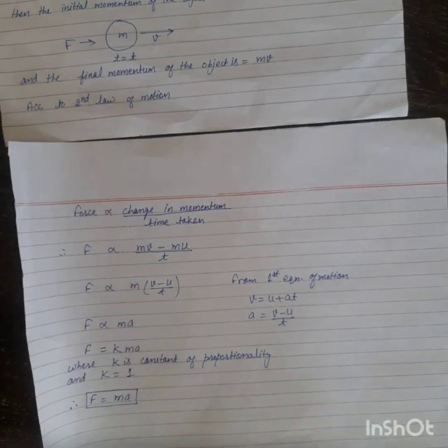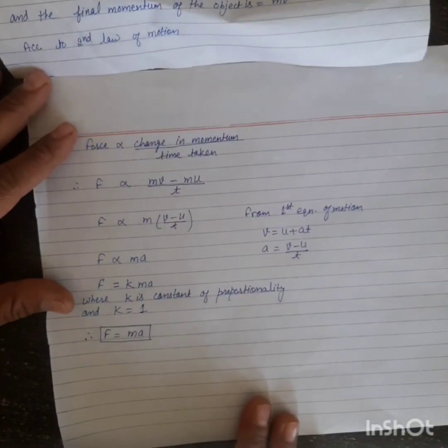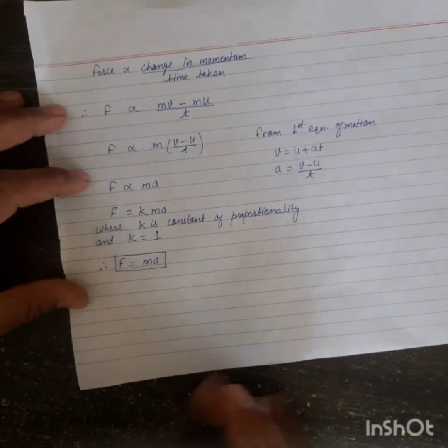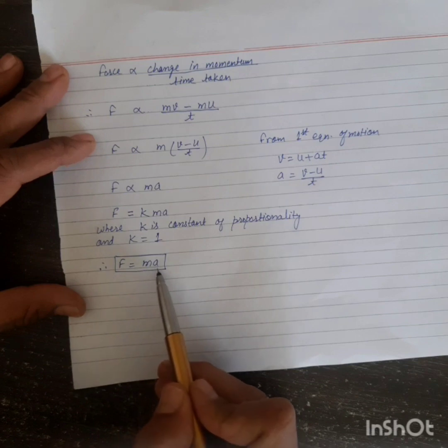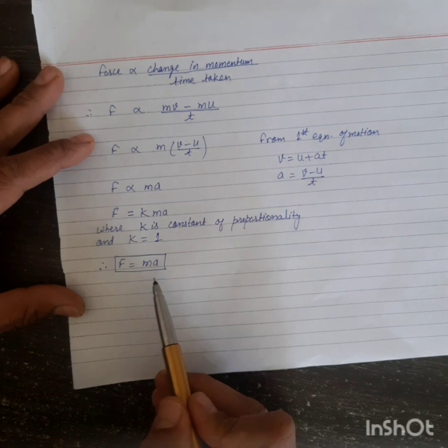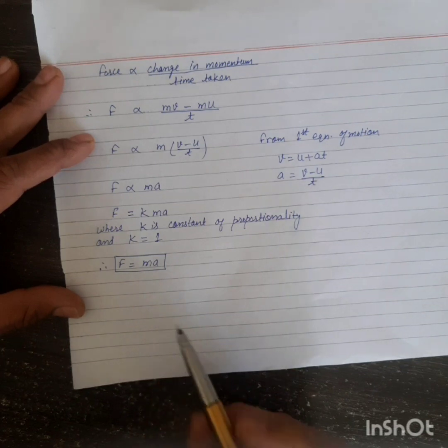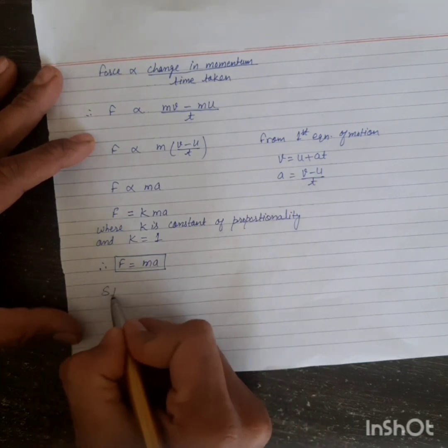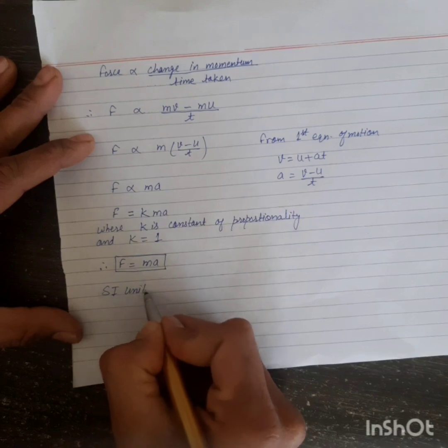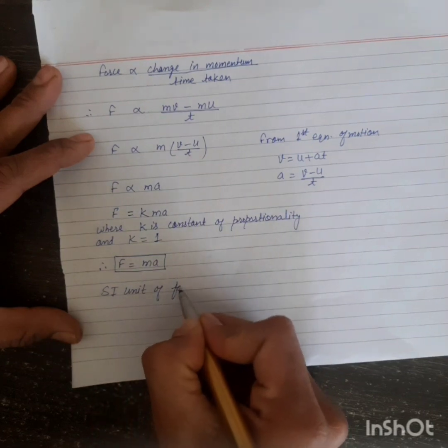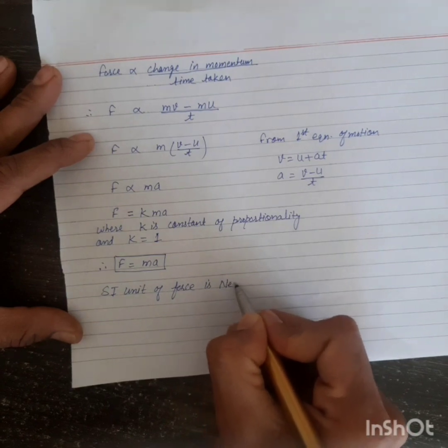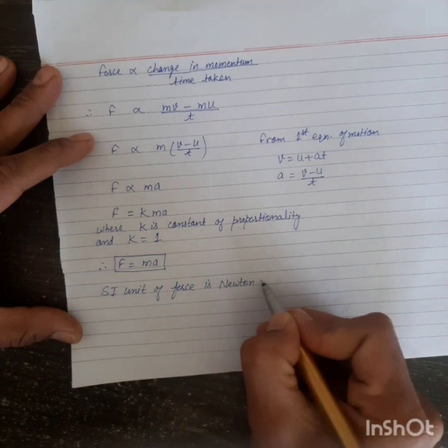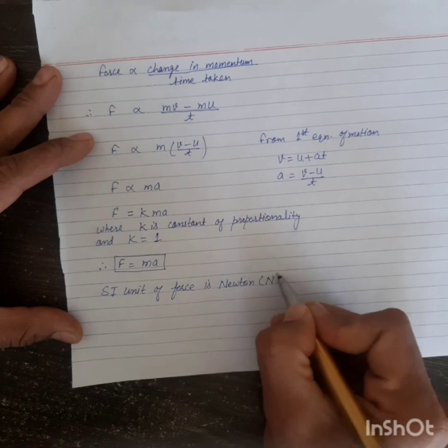So from second law of motion, we found that force is equal to mass into acceleration produced in the body by the applied force. And SI unit of force is Newton, represented by symbol capital N.